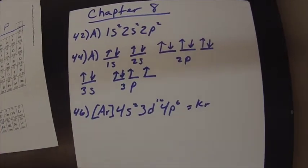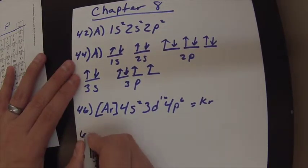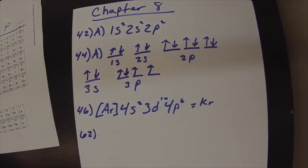Alright, next up is 62. 62 is talking about atomic radii. It says choose the larger atom from each pair.